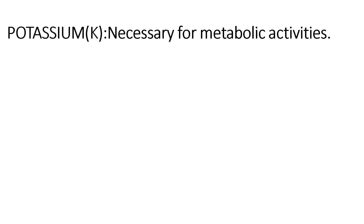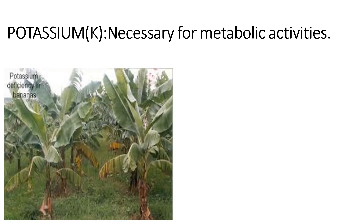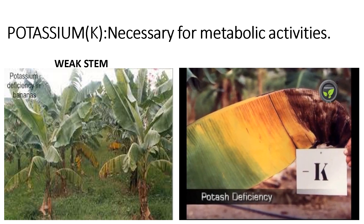Potassium is very necessary for metabolic activities like production of food — that is, synthesizing food with the help of sunlight, water, and chlorophyll — as well as growth, reproduction, etc. If there is potassium deficiency in plants, the stems grow very weak, as seen in the stems of banana here. Another effect is wilting of leaves, as seen in this picture.